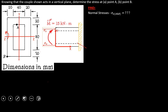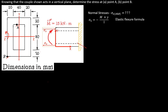We need to find the normal stress at point A and point B. At point A, the stress is acting on point A into the page. These normal stresses are caused by bending, so we will use a formula called the elastic flexural formula, which is: σ = −M·y / I, where M is the moment, y is the distance from the neutral axis to point A or point B, and I is the moment of inertia.